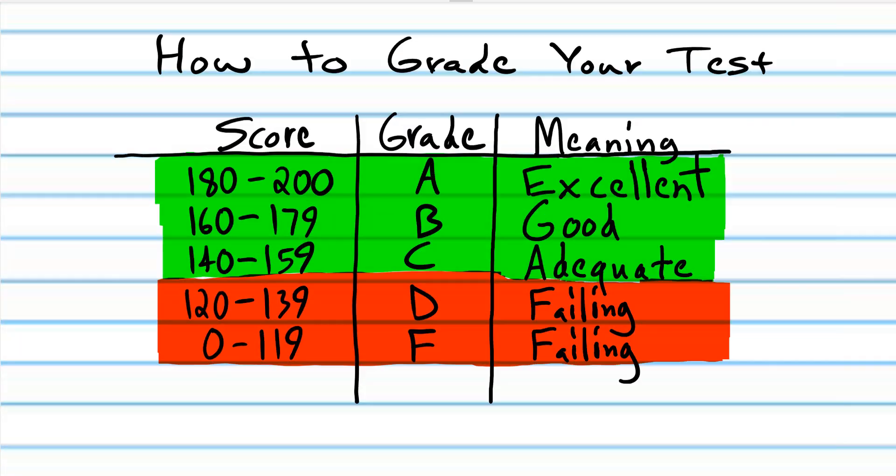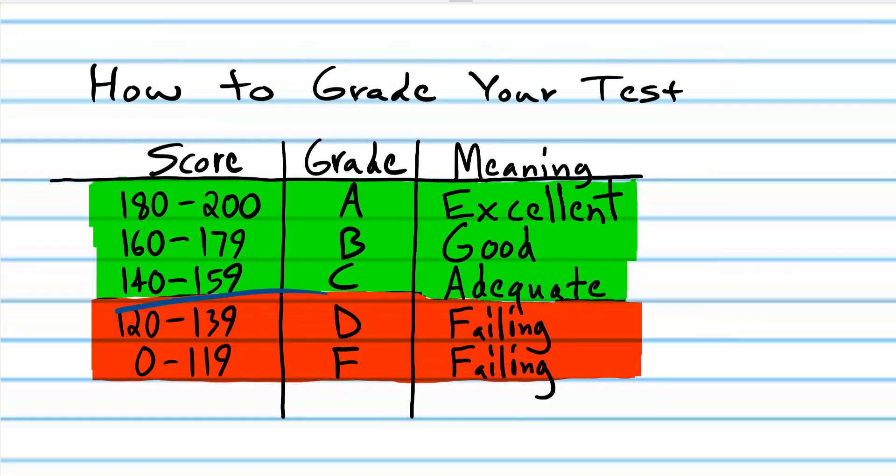Okay, we're back. If you scored 180 to 200, that means you did really well. If you scored 160 to 179, that means you did well but there's a few things you could work on. And if you scored 140 to 159, that means you did well but there's quite a few things you could work on. And anything below that, that means you probably didn't study enough.